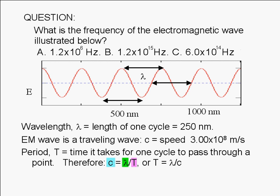T here is the time it takes for the wave to go through one cycle and is called the period. We can rearrange the equation c equals lambda over T to solve for T. The period T is equal to lambda over c.